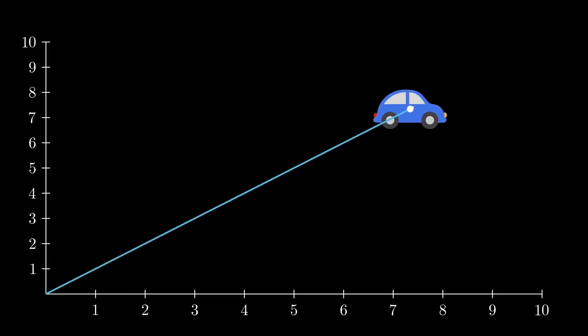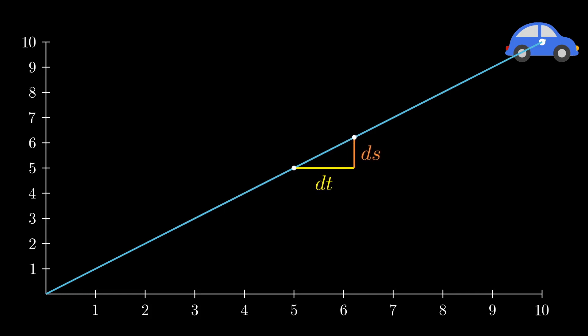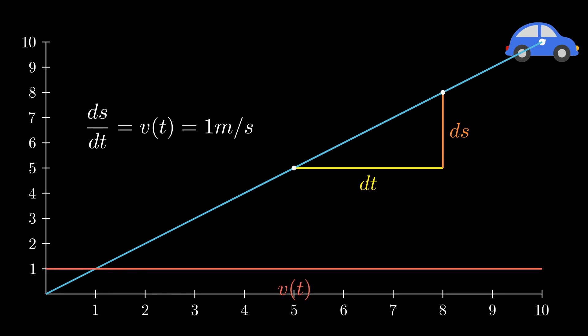We derive Vt by taking a look at the change in distance over the change in time. This is probably what you have learned in high school as a gradient triangle. When taking a look at linear functions this is very easy because the slope will always be continuous and the velocity will always be the same, in this case exactly 1. So this means that the graph describing Vt is just a constant continuous value.